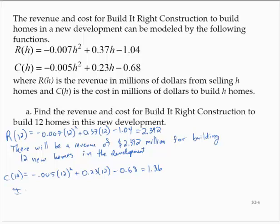So it would cost 1.36 million dollars to build the 12 homes.